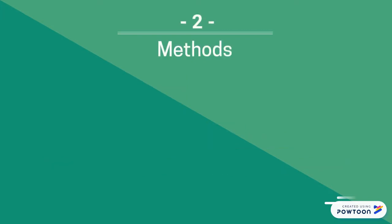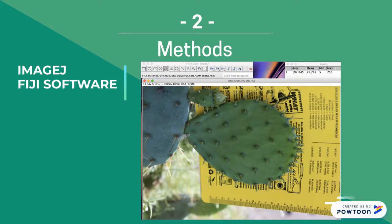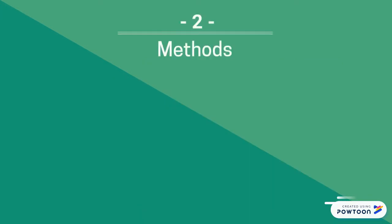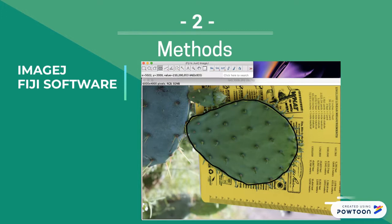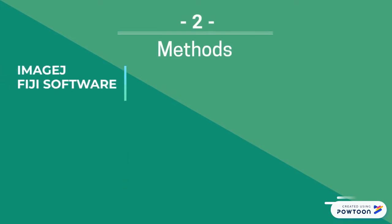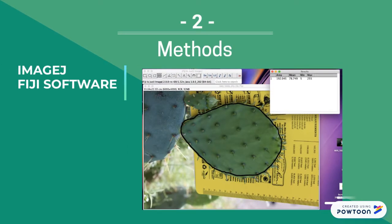First, we set up a scale in ImageJ for centimeters by drawing a line on the ruler in the image and using the set scale function within ImageJ. Then, we enclosed the area we wanted to calculate using the shape tool. Lastly, we used the measure function to provide the area in centimeters squared for the lobe or for the cocus infestation.